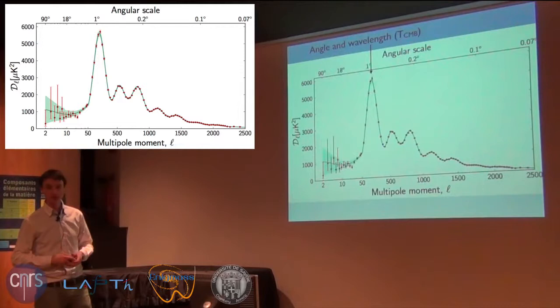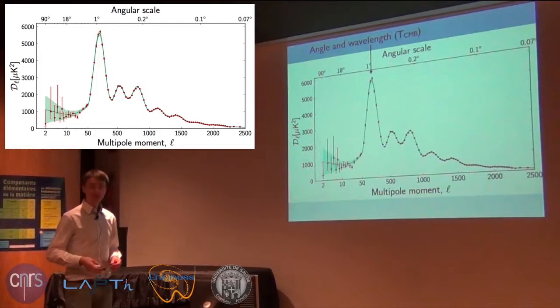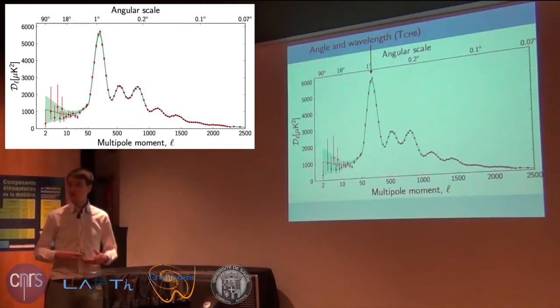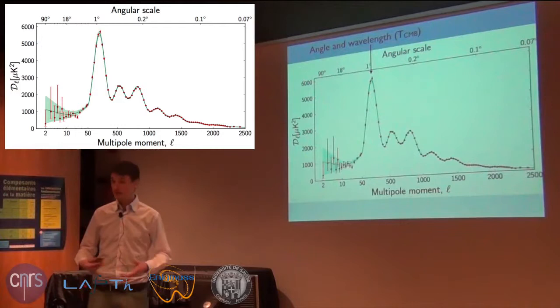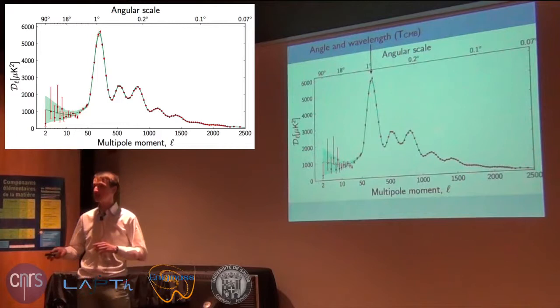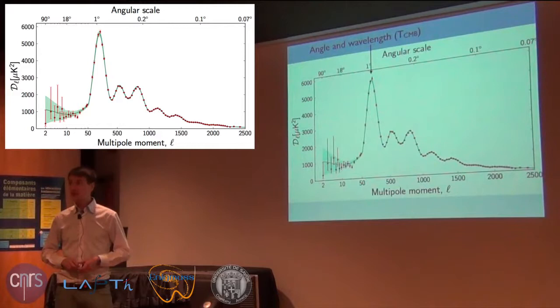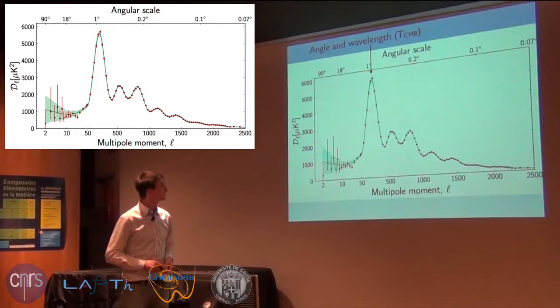In the next course I will try to explain how you compute this peaked structure — it will be a difficult task for an hour and a half, but I'll give it a shot. More interestingly, I'll try to explain what this peak structure would have looked like with different ingredients in the universe: how do these peaks change if you change the amount of dark matter, dark energy, baryons, photons, or the age of the universe? That's most interesting if you don't want to do CMB calculations but still want to understand qualitatively how these peaks differ with different matter content.